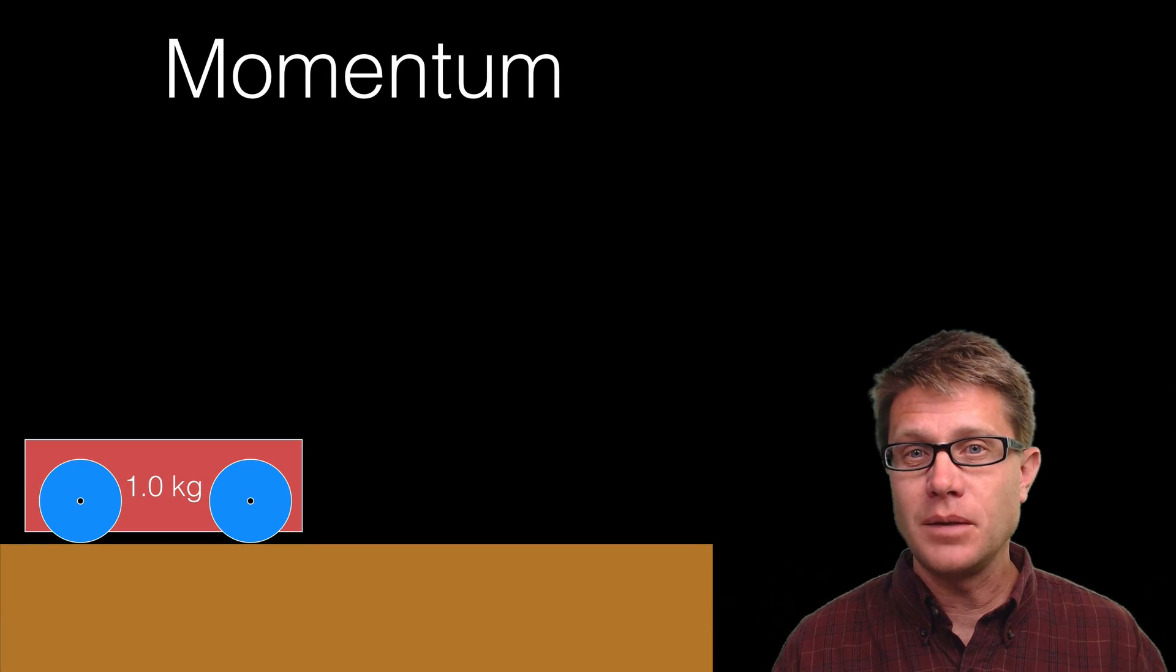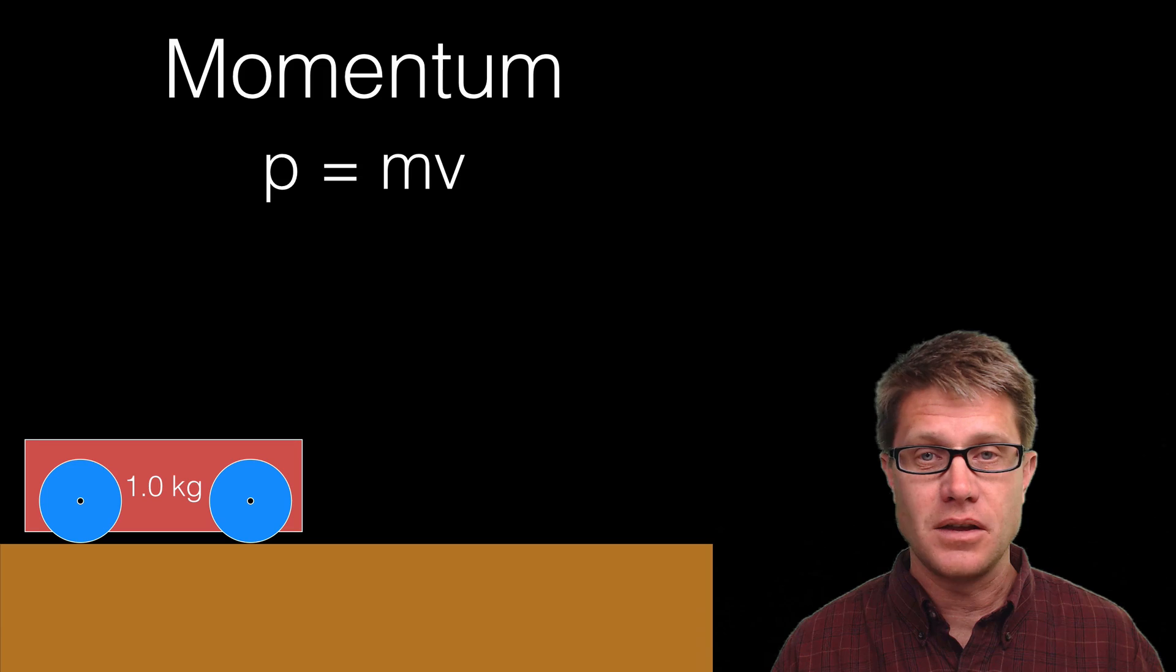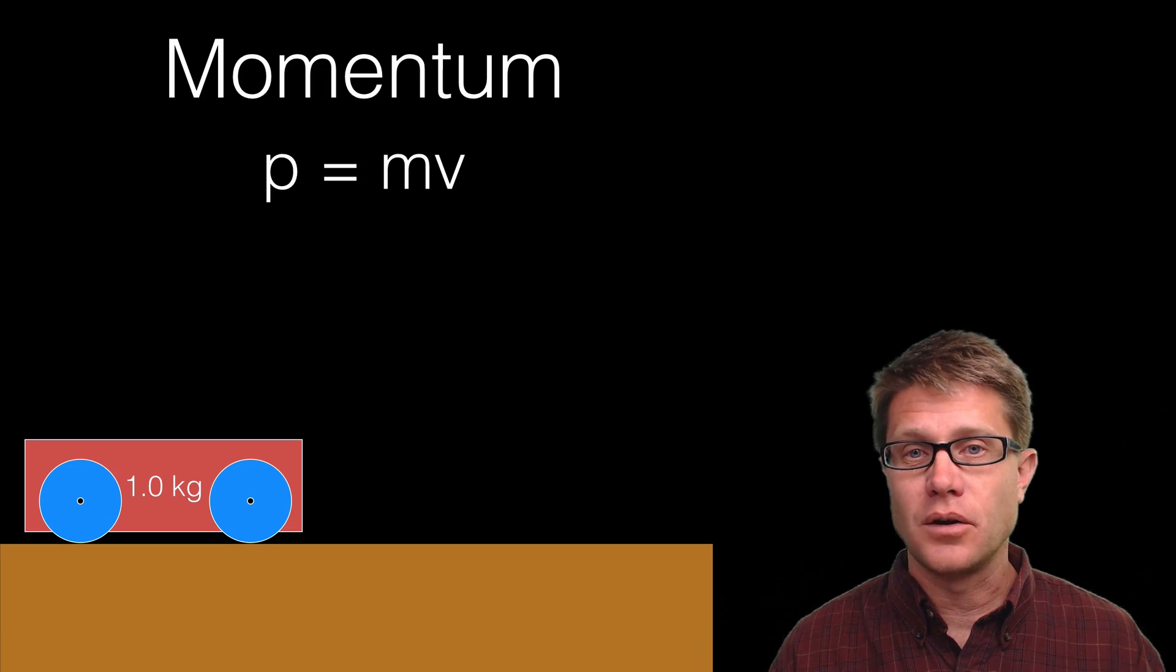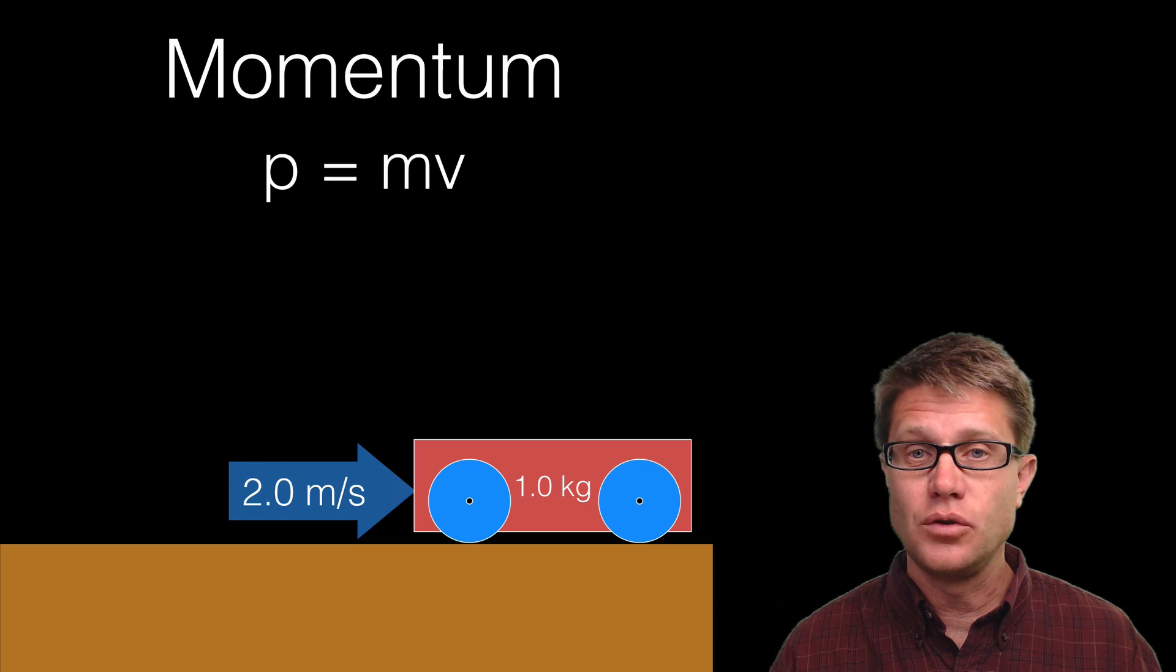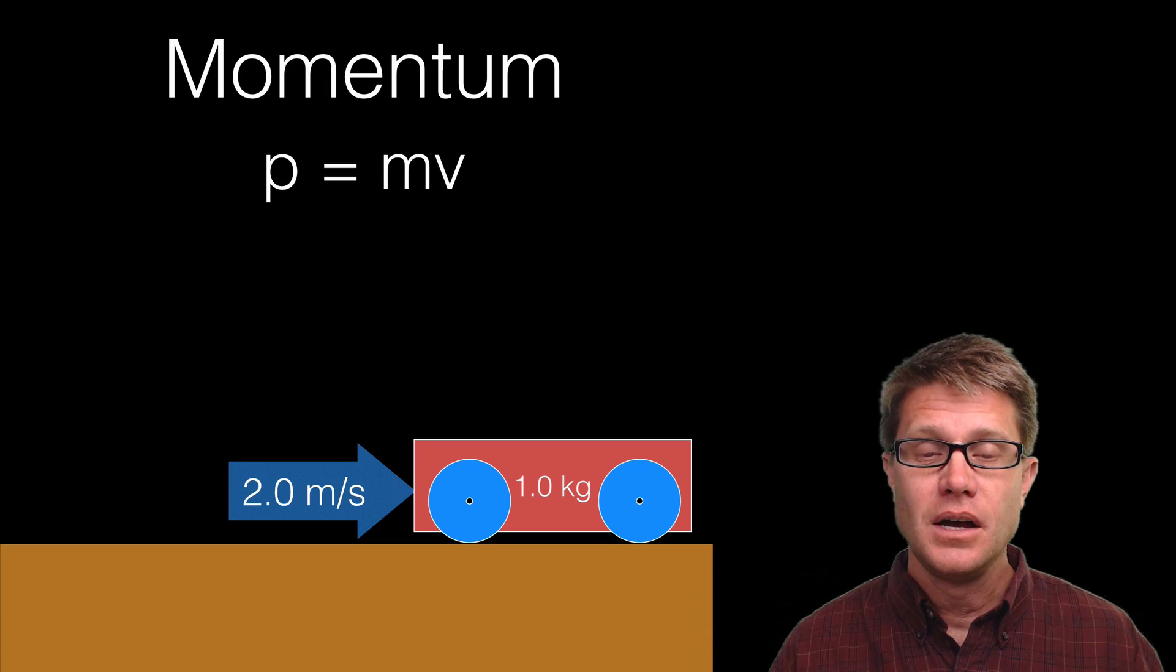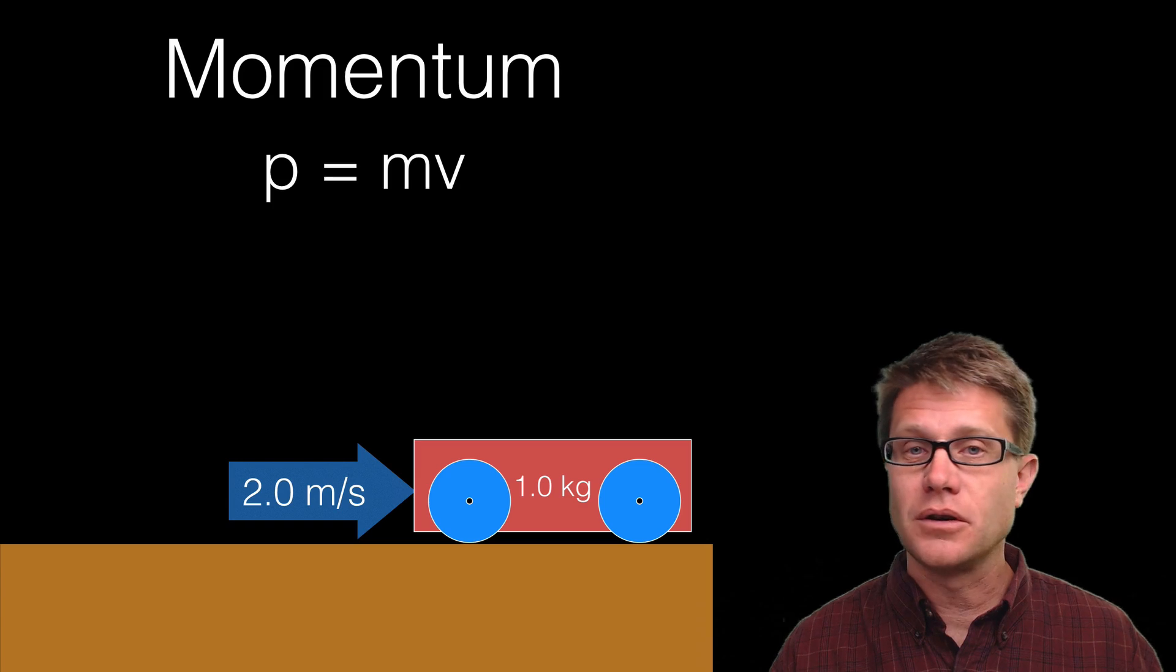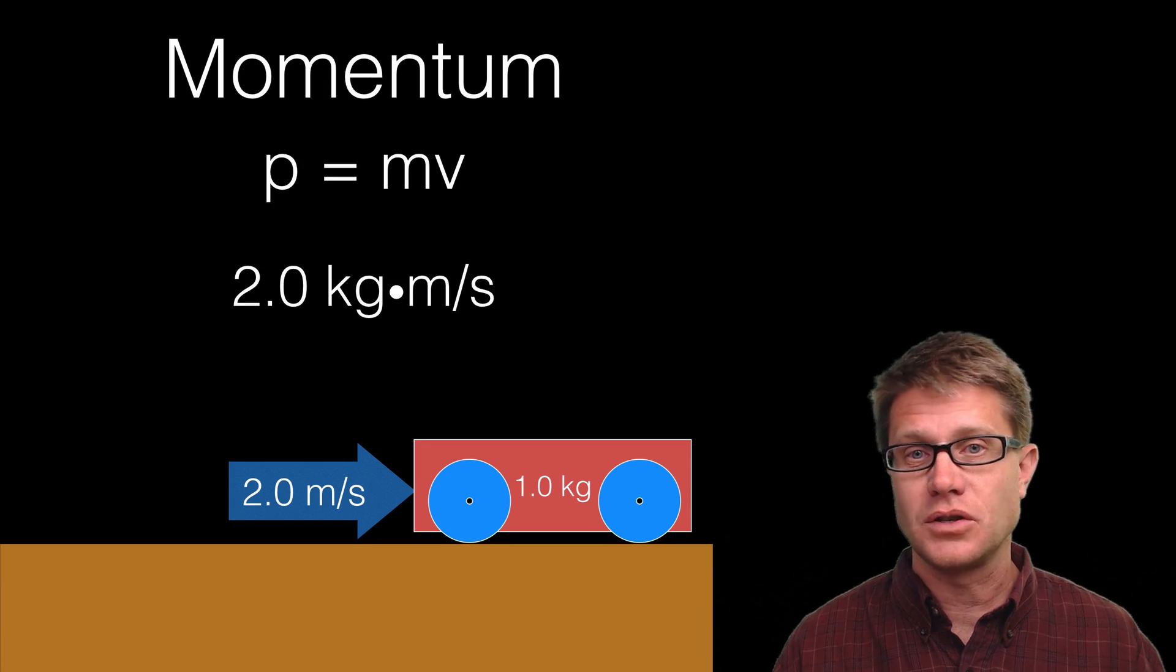And so if we define momentum, the equation is p equals mv, where we are multiplying the mass of an object times the velocity of the object. So if we have this cart here, a 1.0 kilogram cart, and it is moving with a velocity of 2.0 meters per second, figuring out its momentum is really easy. You simply multiply 1.0 times 2.0 and so our momentum is going to be 2.0 kilogram meters per second. And so if we add velocity to the right we are going to increase that momentum.